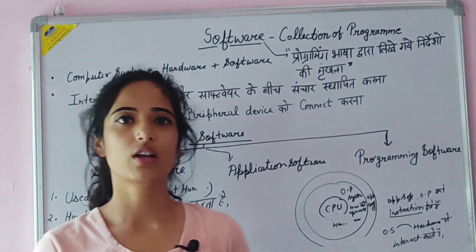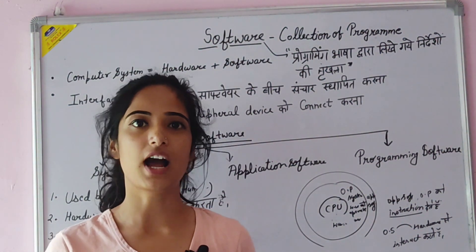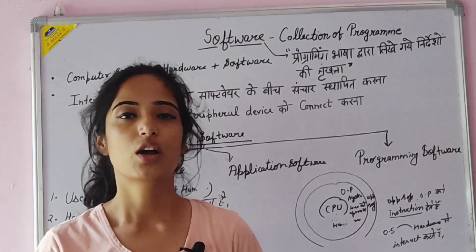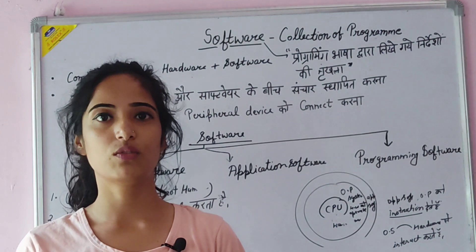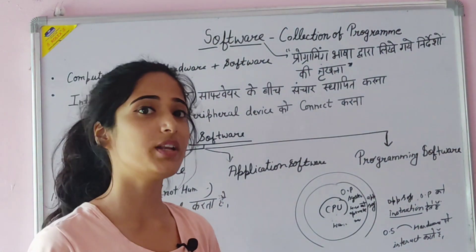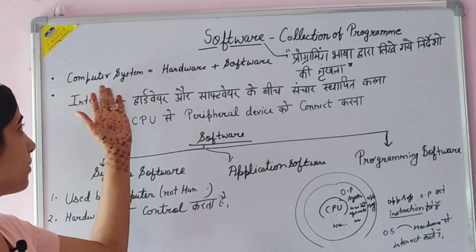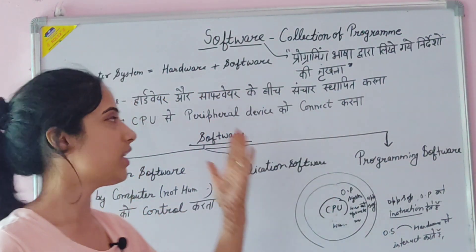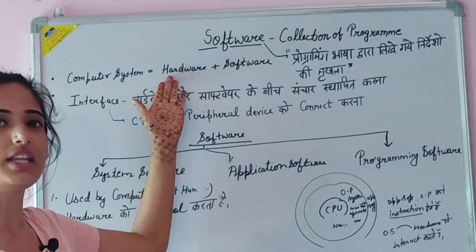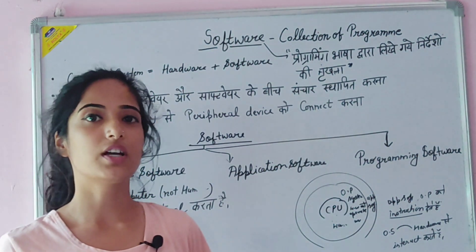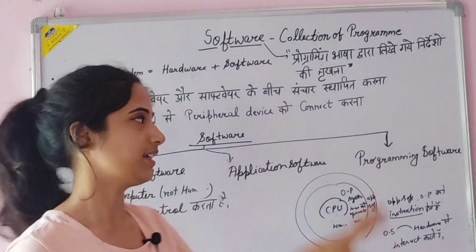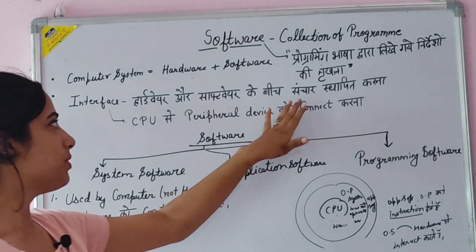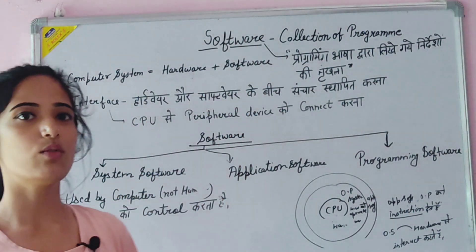Without software, the computer will not work. If you put hardware — suppose you put keyboard or CPU — they will not do work automatically, because they are all machines. So, the computer system is made of two things: hardware and software. Hardware cannot do any work by itself. So what is the interface? Under hardware and software, whatever the connection is — that is the interface. The interface connects the peripheral device to the CPU.